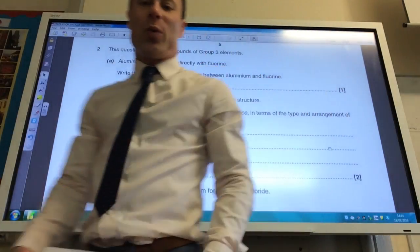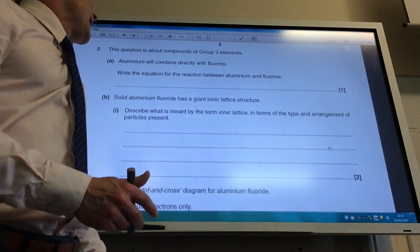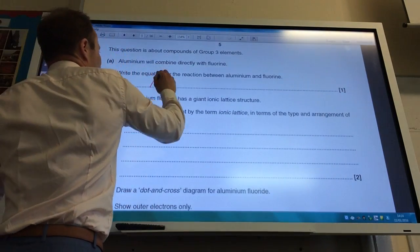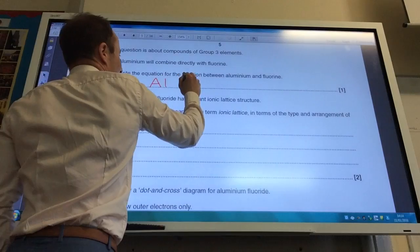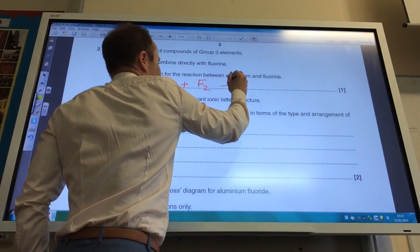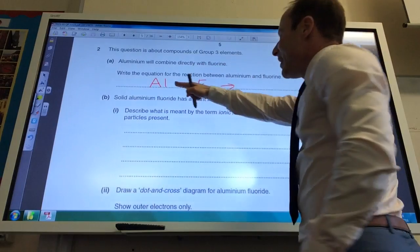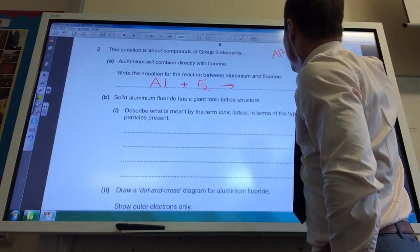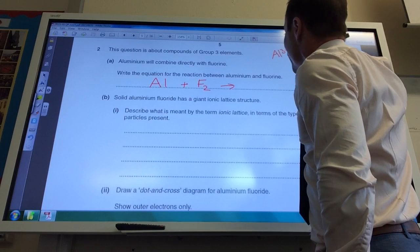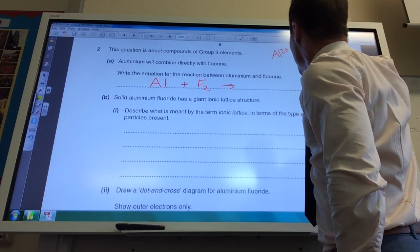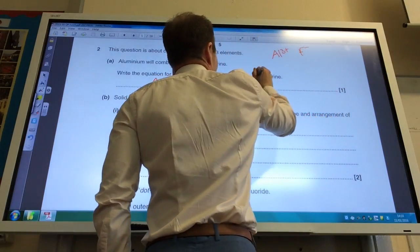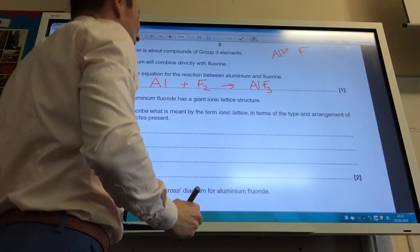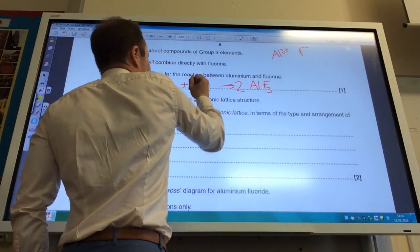Let's move on to question two now. Aluminum will combine directly with fluorine. Write the equation for that. We've got aluminum plus fluorine. Remember, fluorine is diatomic, to give me aluminum fluoride. Aluminum is in group three, it's going to form Al3+ ions. Fluorine will form fluoride, F minus. I need three of those to counteract the three pluses, so it's AlF3. You've then got to balance that: 2Al + 3F2 → 2AlF3.